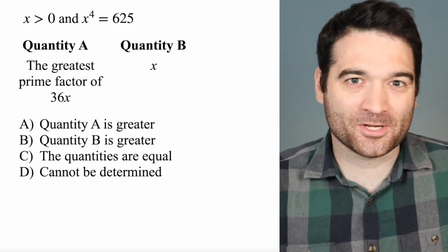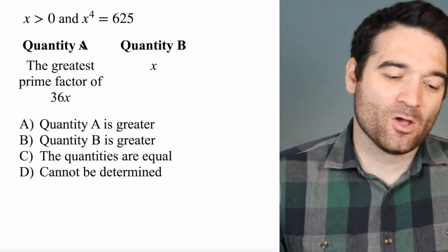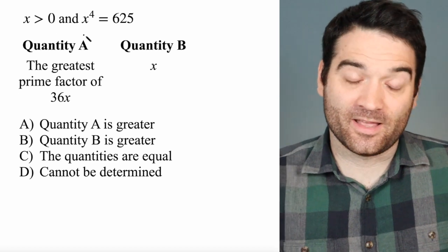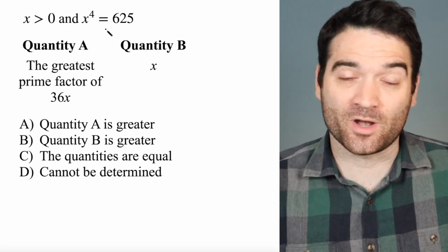Here's a GRE quantitative comparison question. Let's take a look. We're told that x is greater than 0, and that x to the power of 4 is equal to 625.